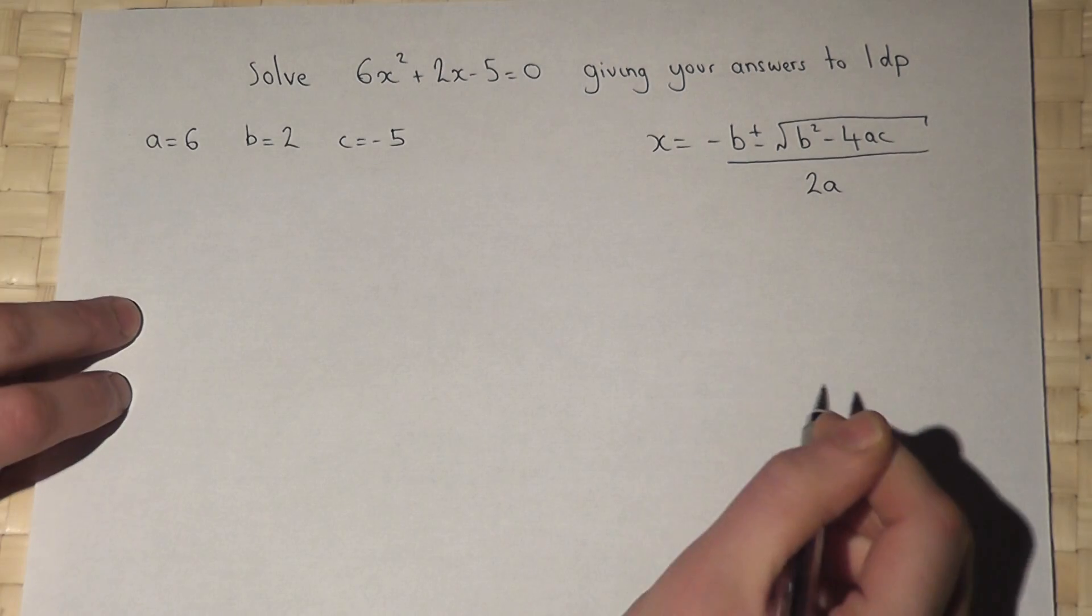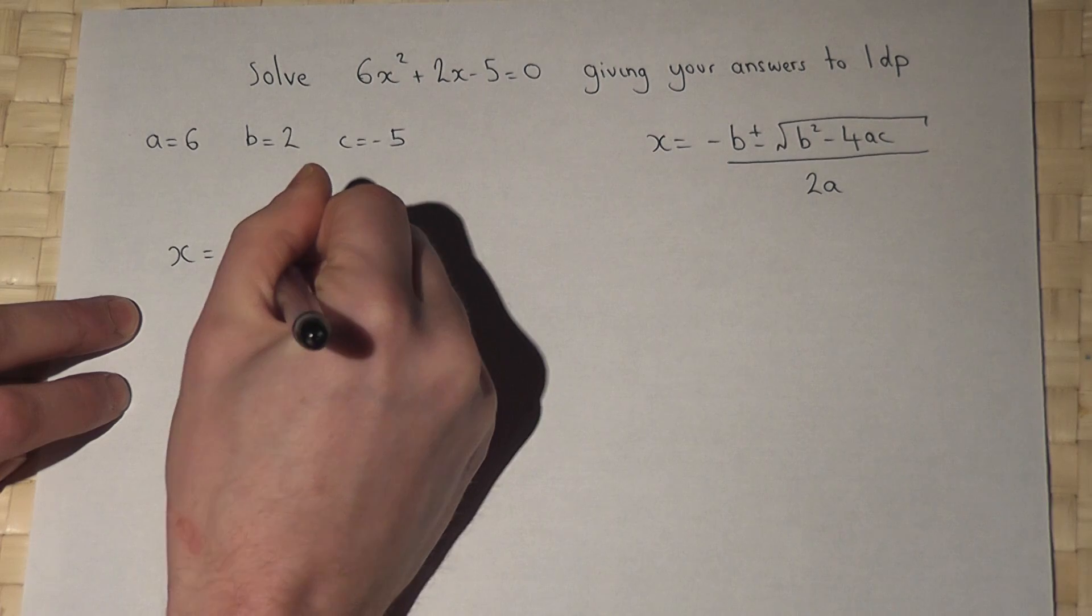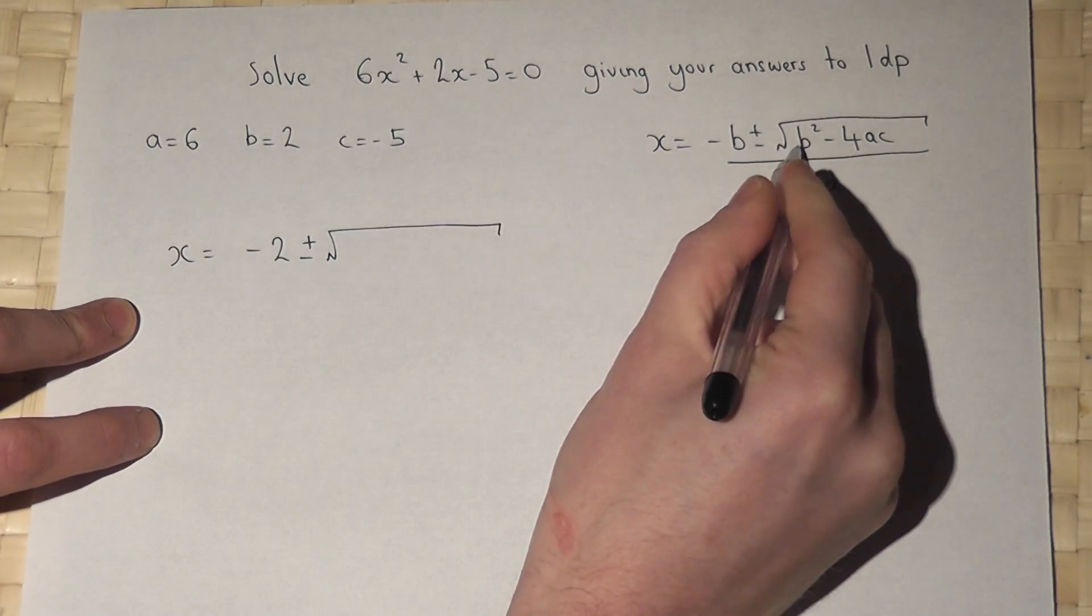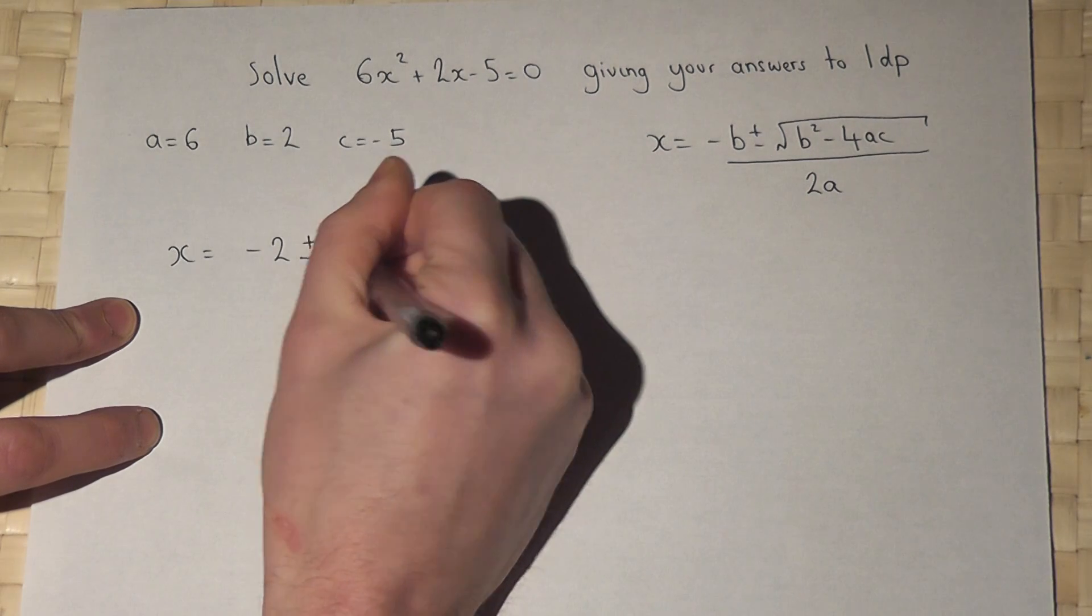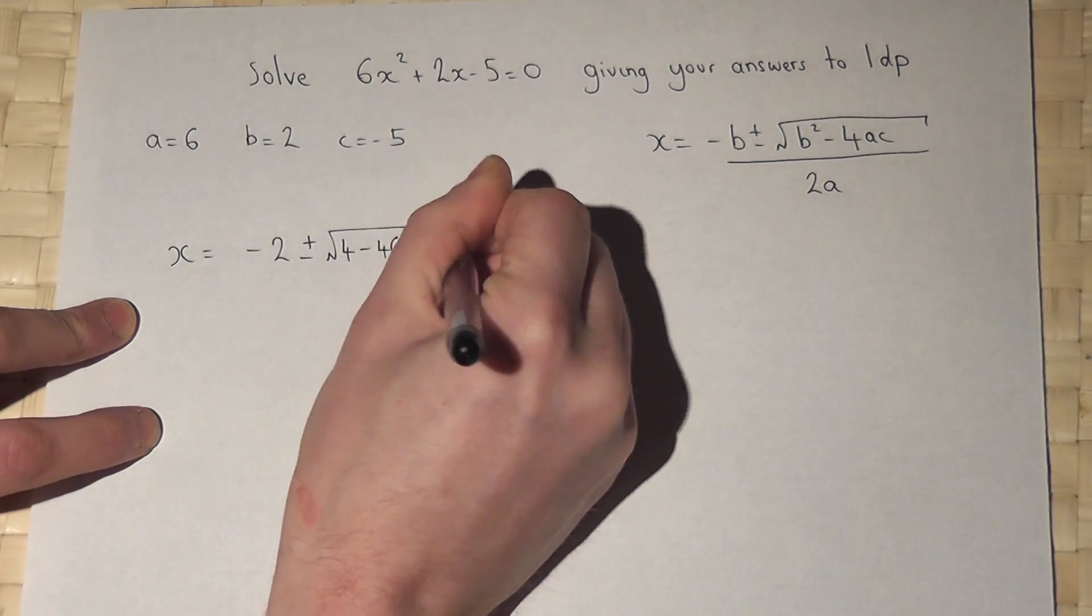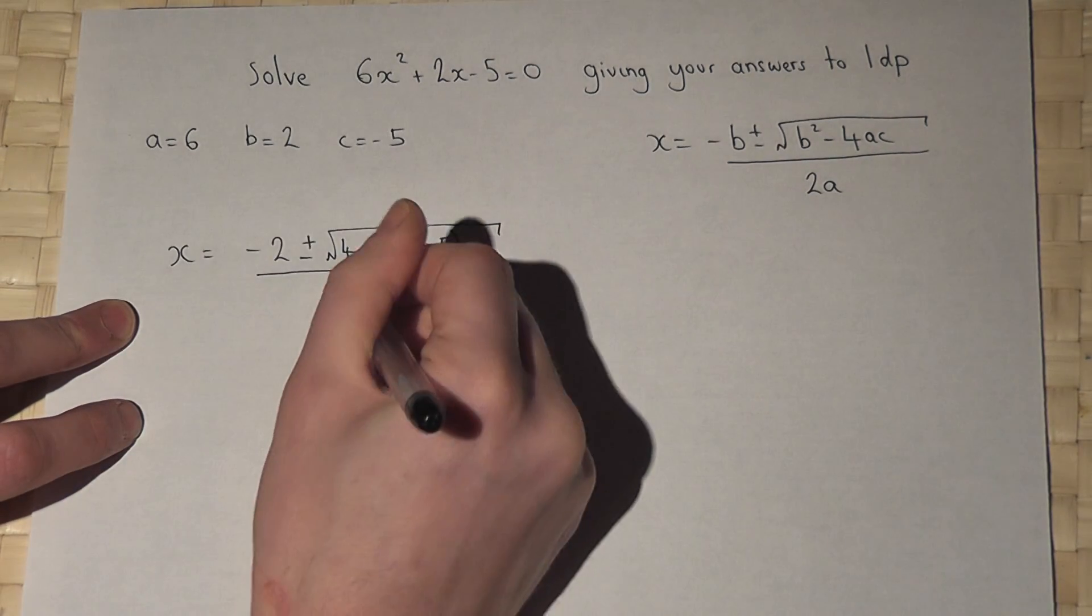So, our solutions are x equals minus b, which is minus 2, plus or minus b squared—2 squared is 4—minus 4 times a times c, all over 2 times 6, which is 12.